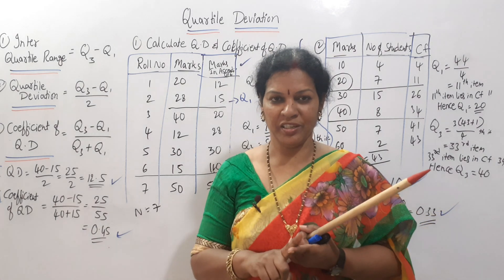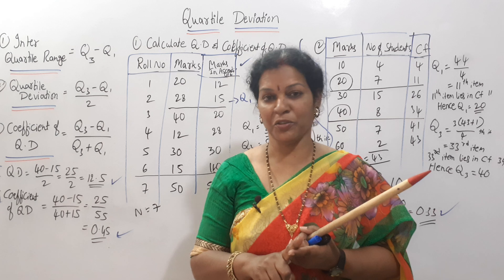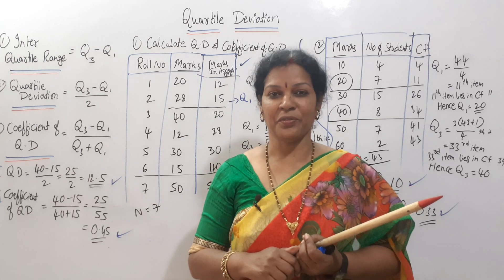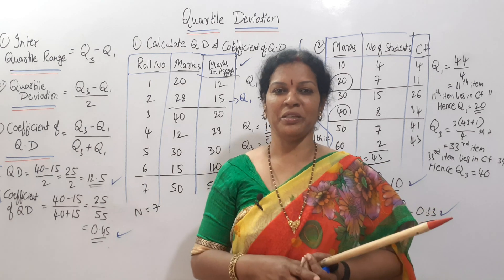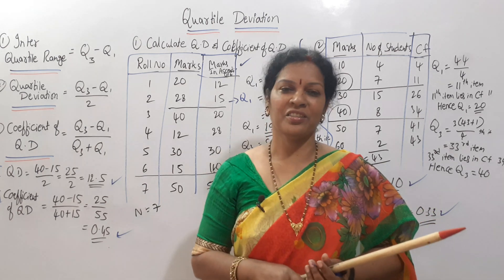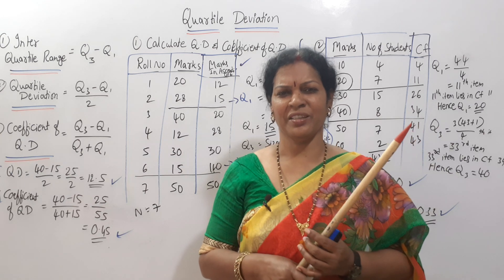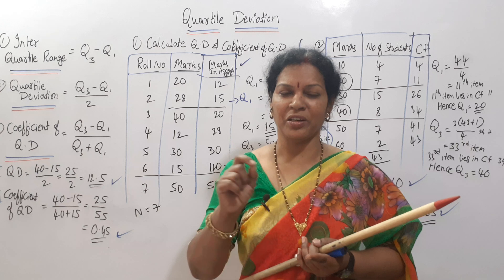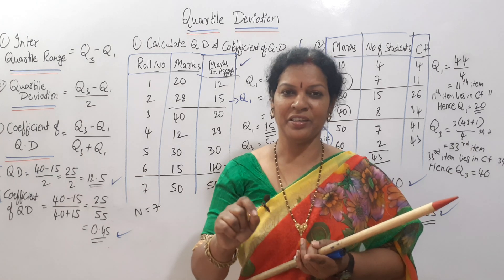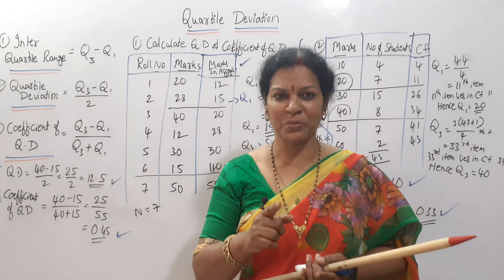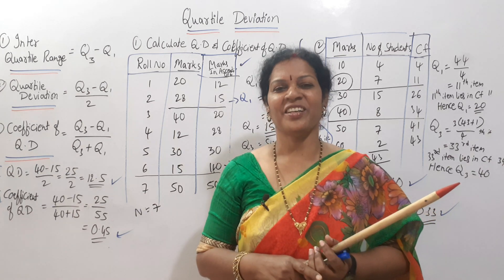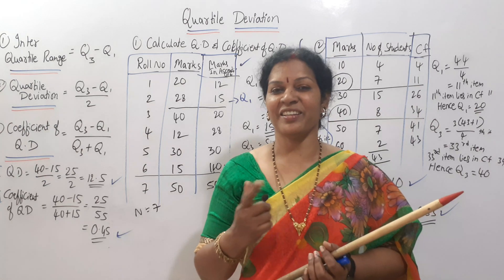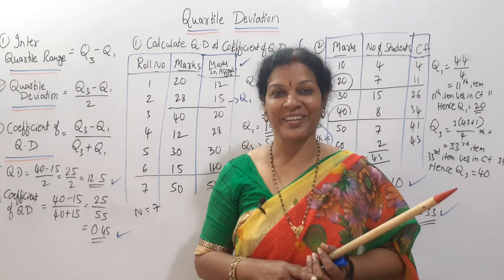For individual series, arrange in ascending order and find Q1 and Q3. For discrete series, calculate the cumulative frequency first. In the next class, we will cover the continuous series. Stay connected to the channel. Practice well and good luck.